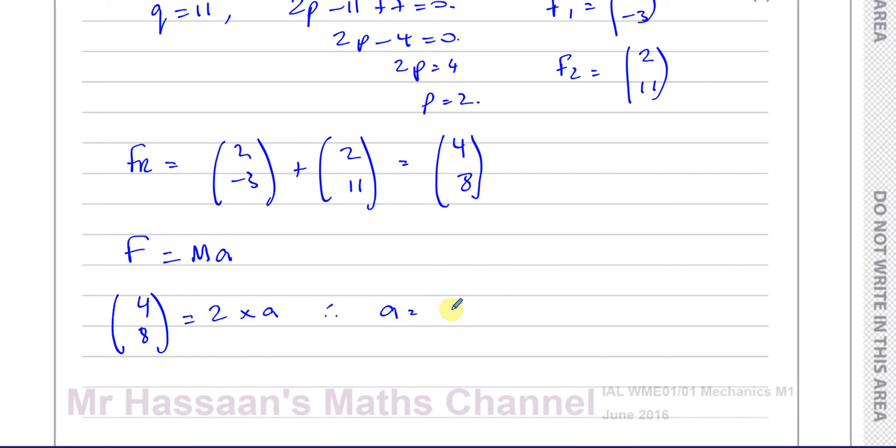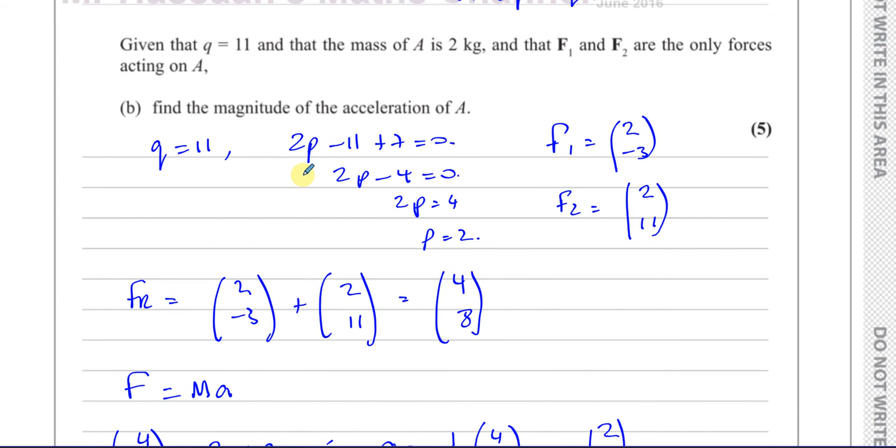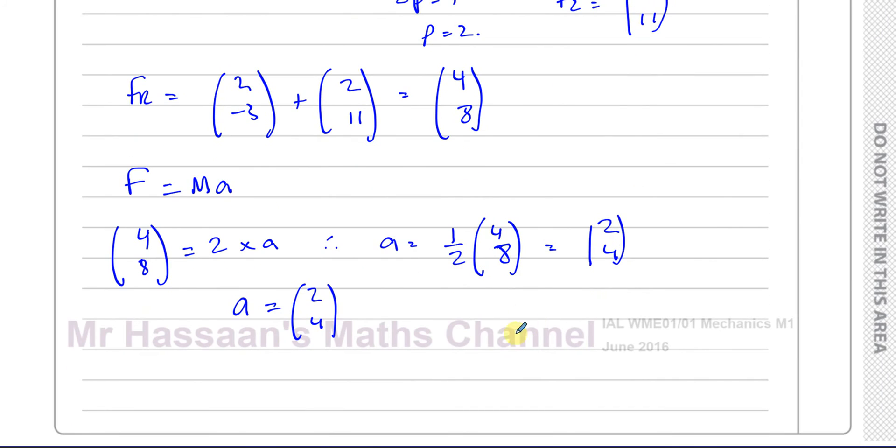So therefore A is equal to a half of (4, 8), which is (2, 4). So the acceleration is (2, 4). They want us to find the magnitude of the acceleration of A. So the magnitude of the acceleration is the square root of 2 squared plus 4 squared, which is the square root of 4 plus 16, which is root 20 meters per second squared.